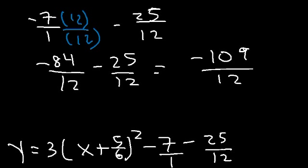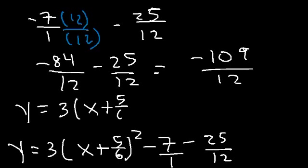So the equation in vertex form is 3 times x plus 5 over 6, squared, minus 109 over 12.